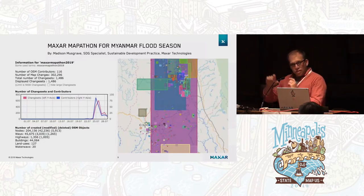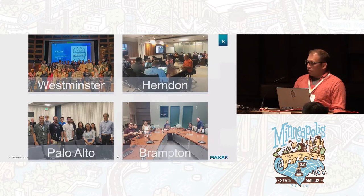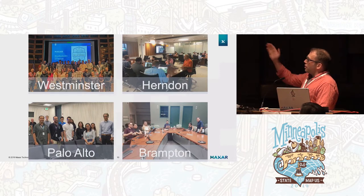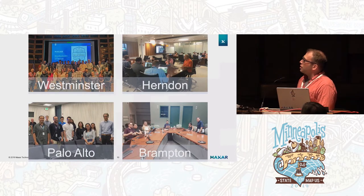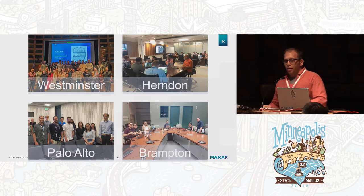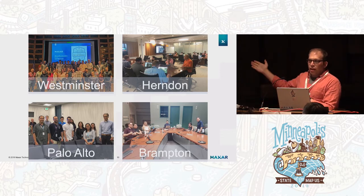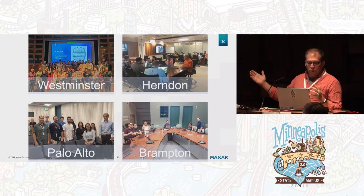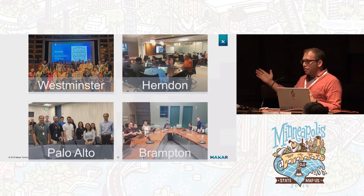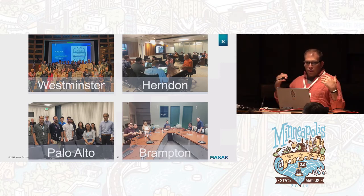I wanted to find Jennings and see if we could look at his chart to find who joined from our end. We have a number of different locations — Westminster is our headquarters, so you can see a larger group there. But exciting is Palo Alto and Brampton: the Palo Alto team builds satellites and had never mapped before, and the Brampton team in Canada runs ground stations and had never mapped before either. This was their first experience getting involved, and they all had a positive experience overall. This is probably the first of many.